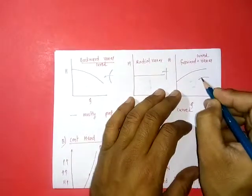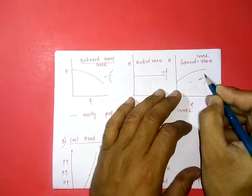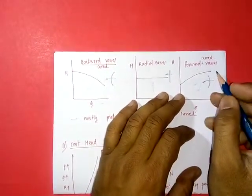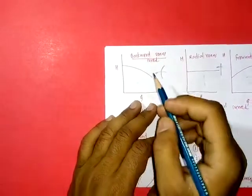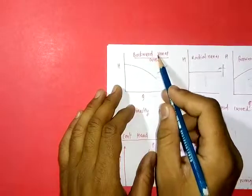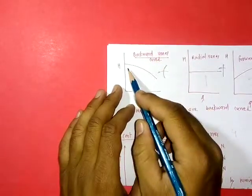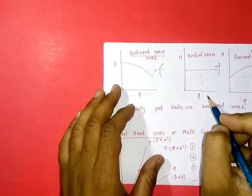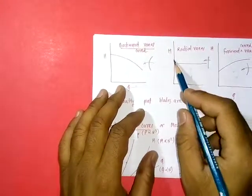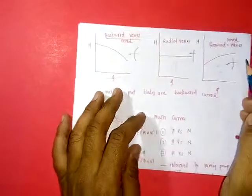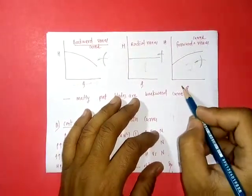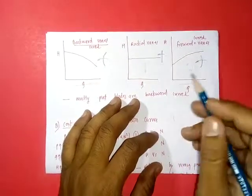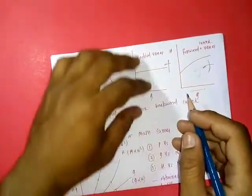Third is forward curved vanes — if this is the direction of rotation, the vanes are curved in the forward direction. For backward curved vane pumps, as discharge increases, head decreases. For radial vanes, with increasing discharge, head remains constant. For forward curved vanes, as discharge increases, head also increases.